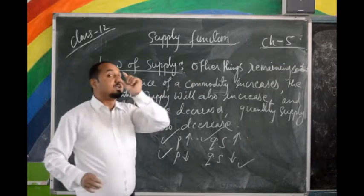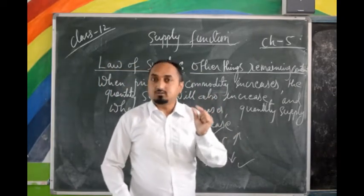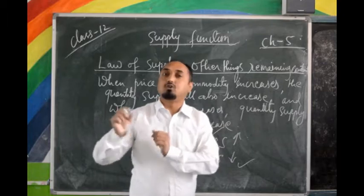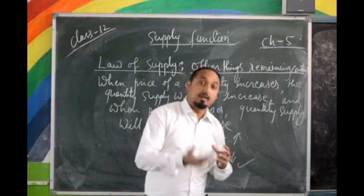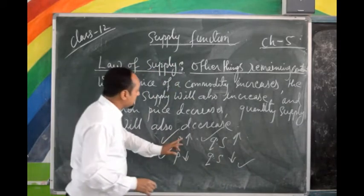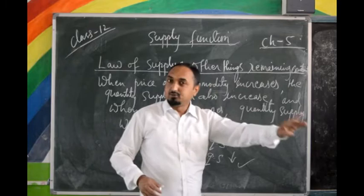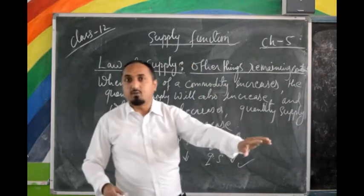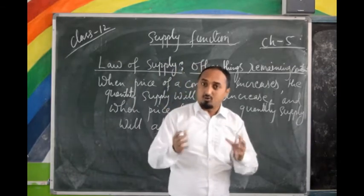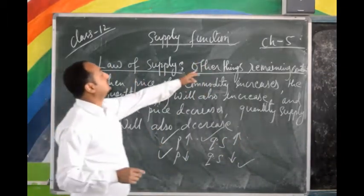One important thing mentioned here is 'all the things remaining constant.' This is a very important point. All the things remaining constant means all the determinants are being kept as constant — we are not including the influence or effect of other factors at the same time. Here we are showing only the relationship between price and quantity supplied.